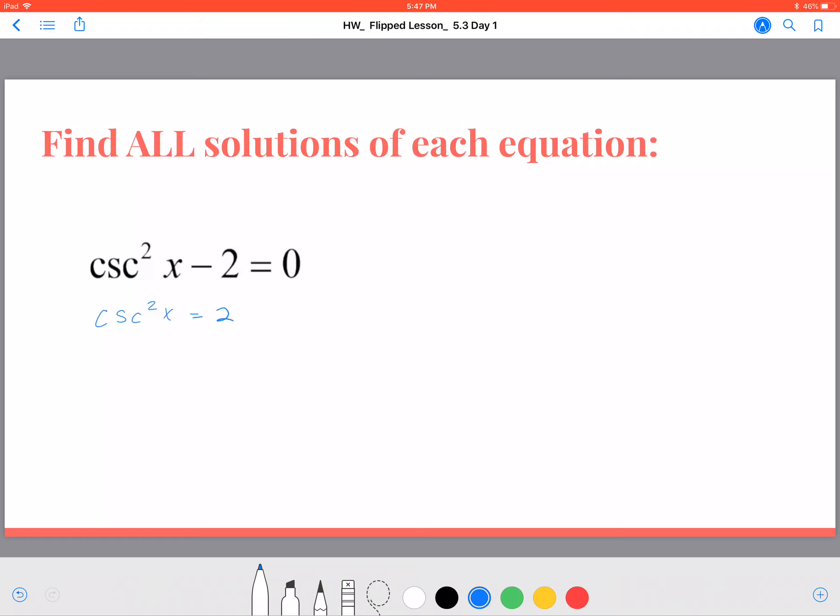And then I'm going to take the square root of each side, but remember when we're taking the square root to solve like we did in quadratics when we were completing the square, we get the cosecant of x is equal to plus or minus the square root of 2.